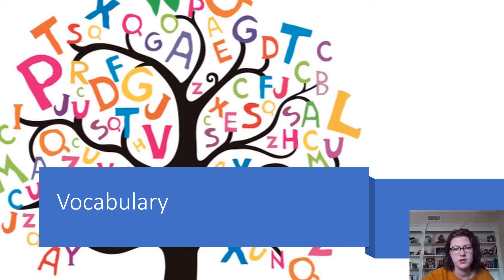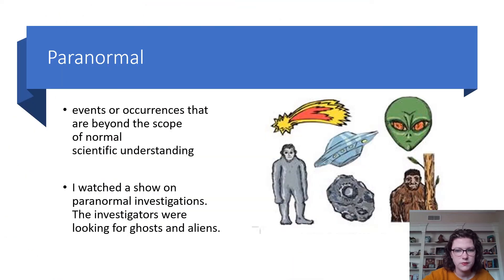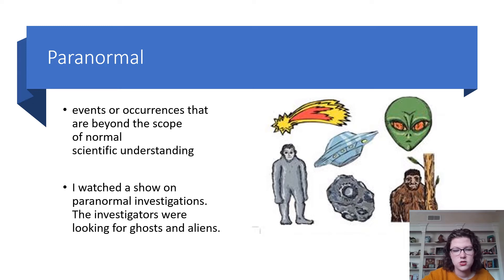Let's go over some key terms and vocabulary we'll need as we read this passage. The first one is paranormal — events or occurrences that are beyond the scope of normal scientific understanding. In the picture you'll see a UFO, an alien, a Sasquatch. Example sentence: I watched a show on paranormal investigations; the investigators were looking for ghosts and aliens.